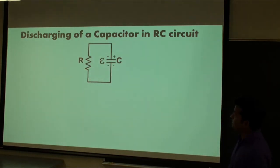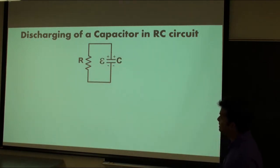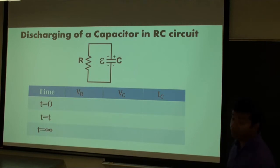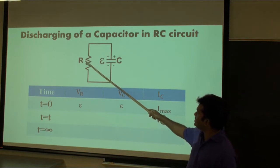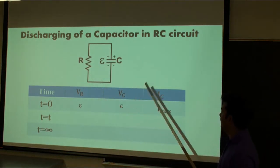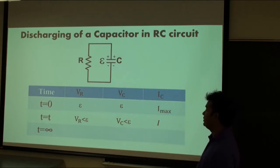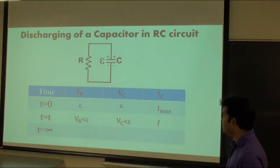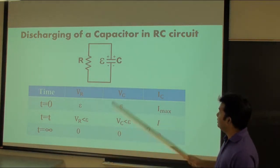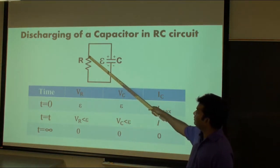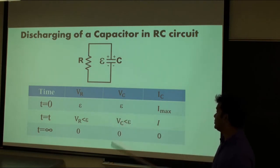For discharging of the capacitor, we have a capacitor fully charged — one terminal has positive, other has negative — and it is connected to the resistor so it will be discharged. We consider three scenarios: T equals zero, T equals T, and T equals infinity. When T equals zero, the resistor will have the same voltage as the capacitor and the current in the circuit will be maximum. After some time, both the voltage across the capacitor and the voltage across the resistor will decrease and have some definite values. After a long time, the capacitor will be fully discharged, there will be no potential difference across the capacitor or the resistor, and the current will be zero. In the discharging case, the voltage across the resistor and the voltage across the capacitor are always equal.